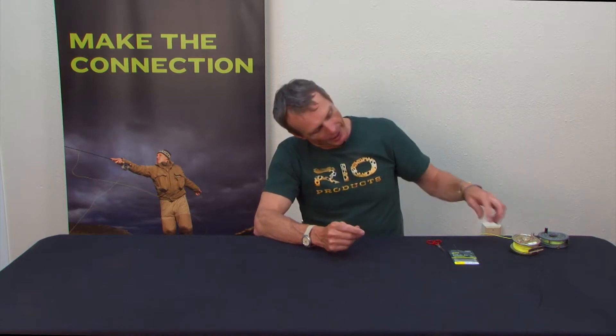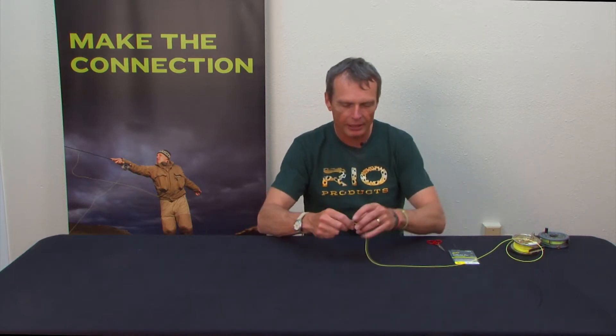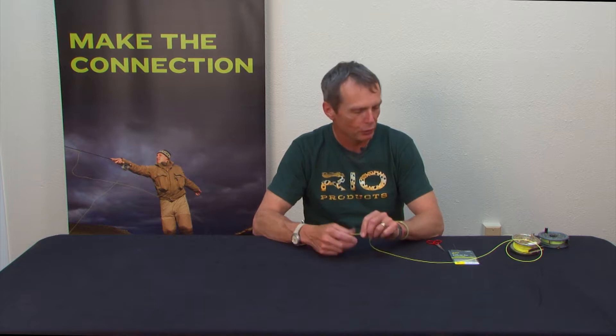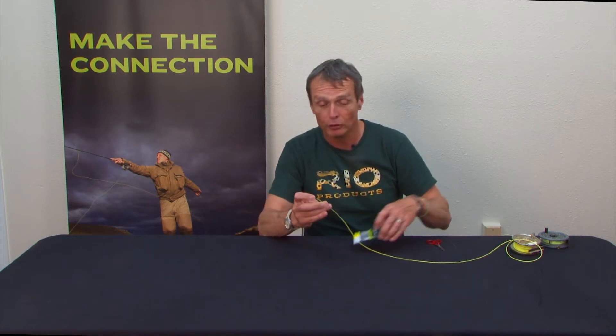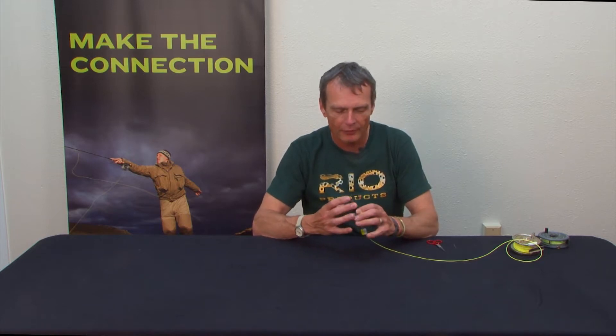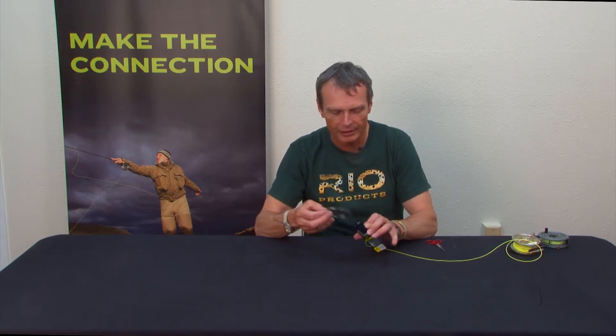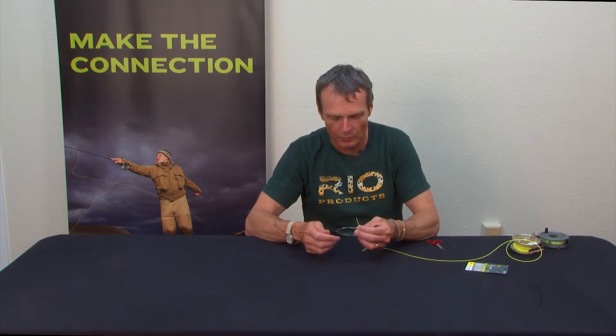I'm going to show you the needle knot, which some people call the needle nail knot. The needle knot is a connecting knot to join fly line to a leader if you don't have a loop in your fly line. Some people don't like them, some people don't have them, but if you don't have a loop in your leader and you have to attach a leader to your fly line, then a needle knot is probably the neatest and nicest way of doing it.